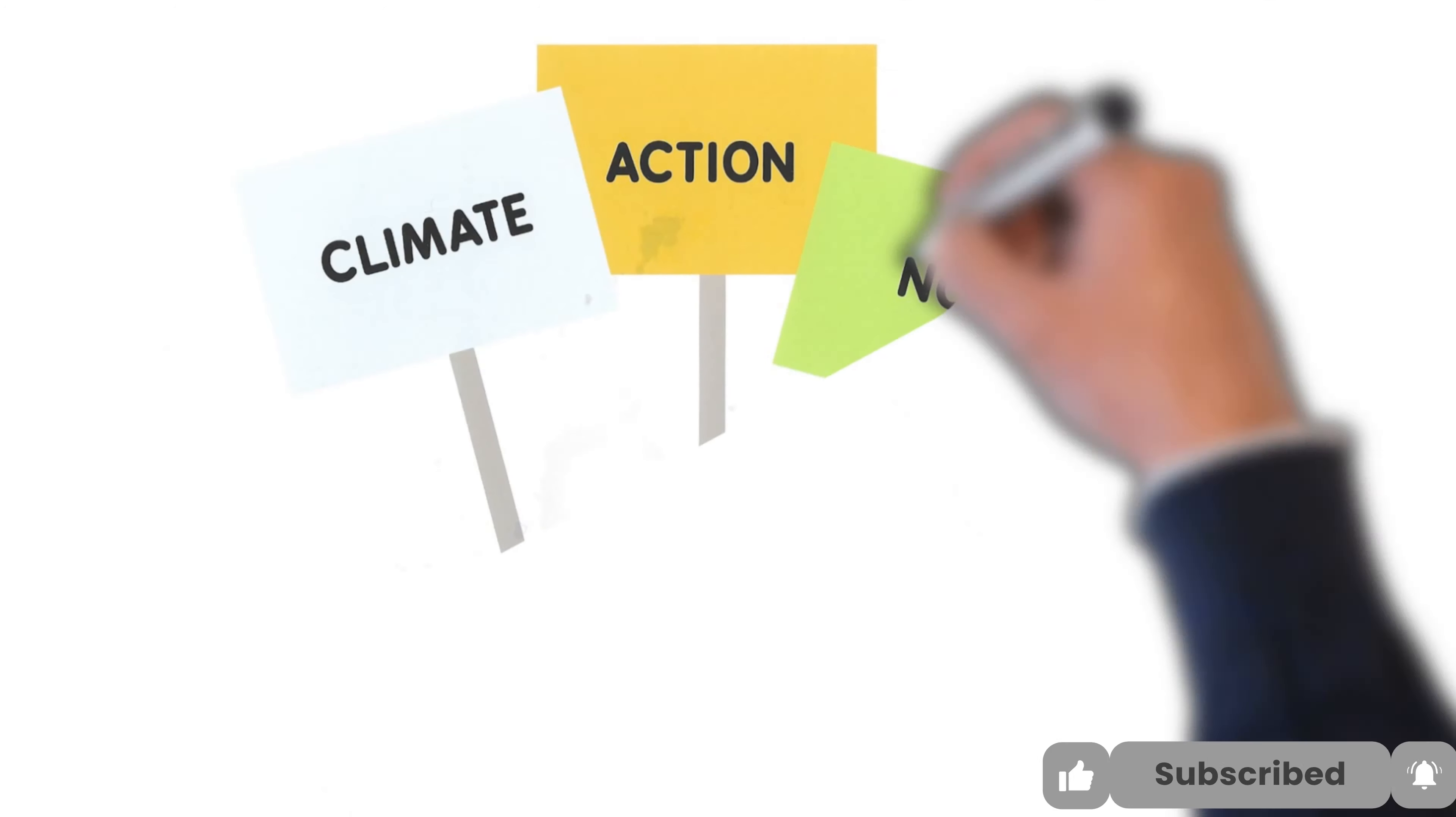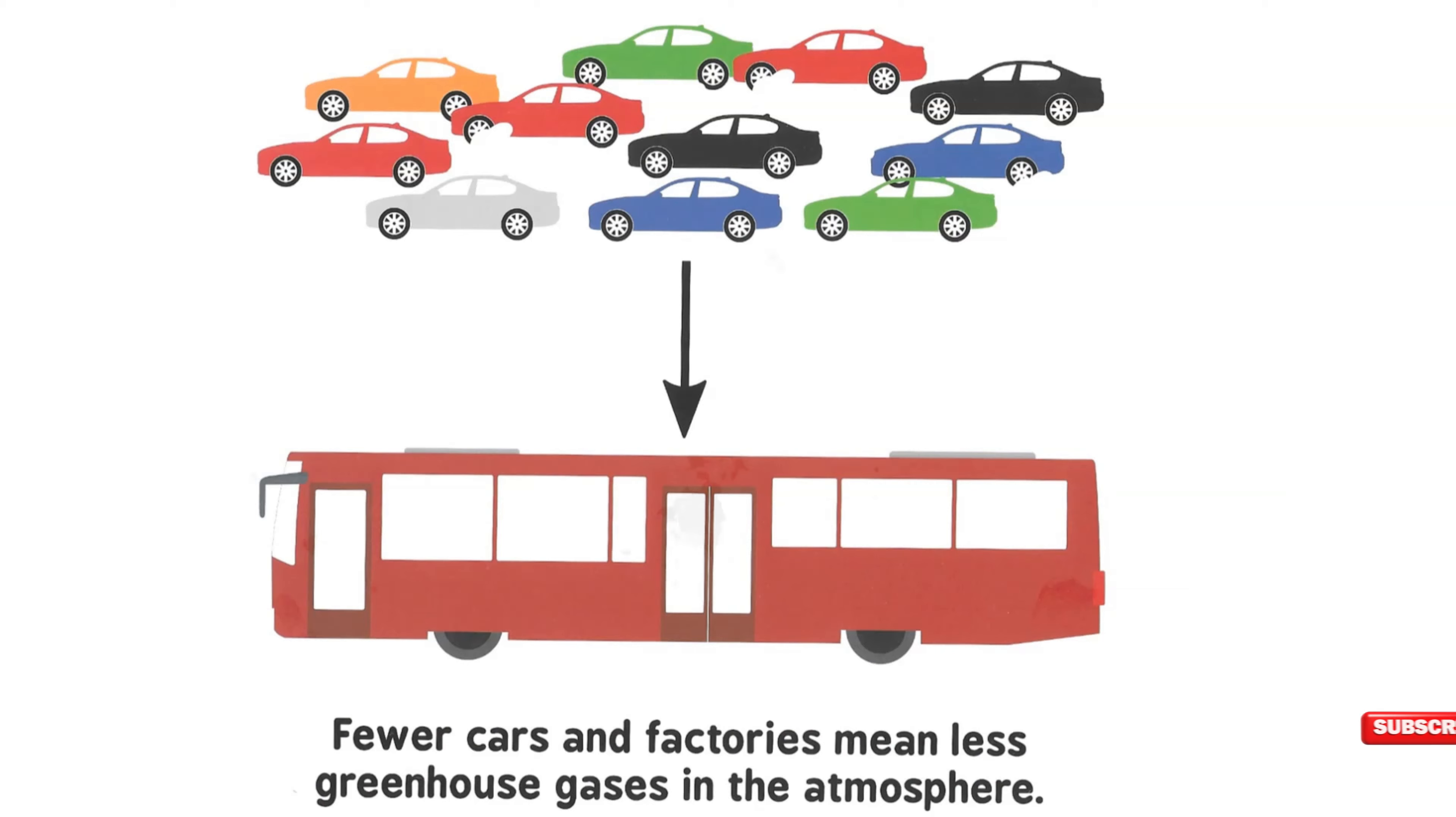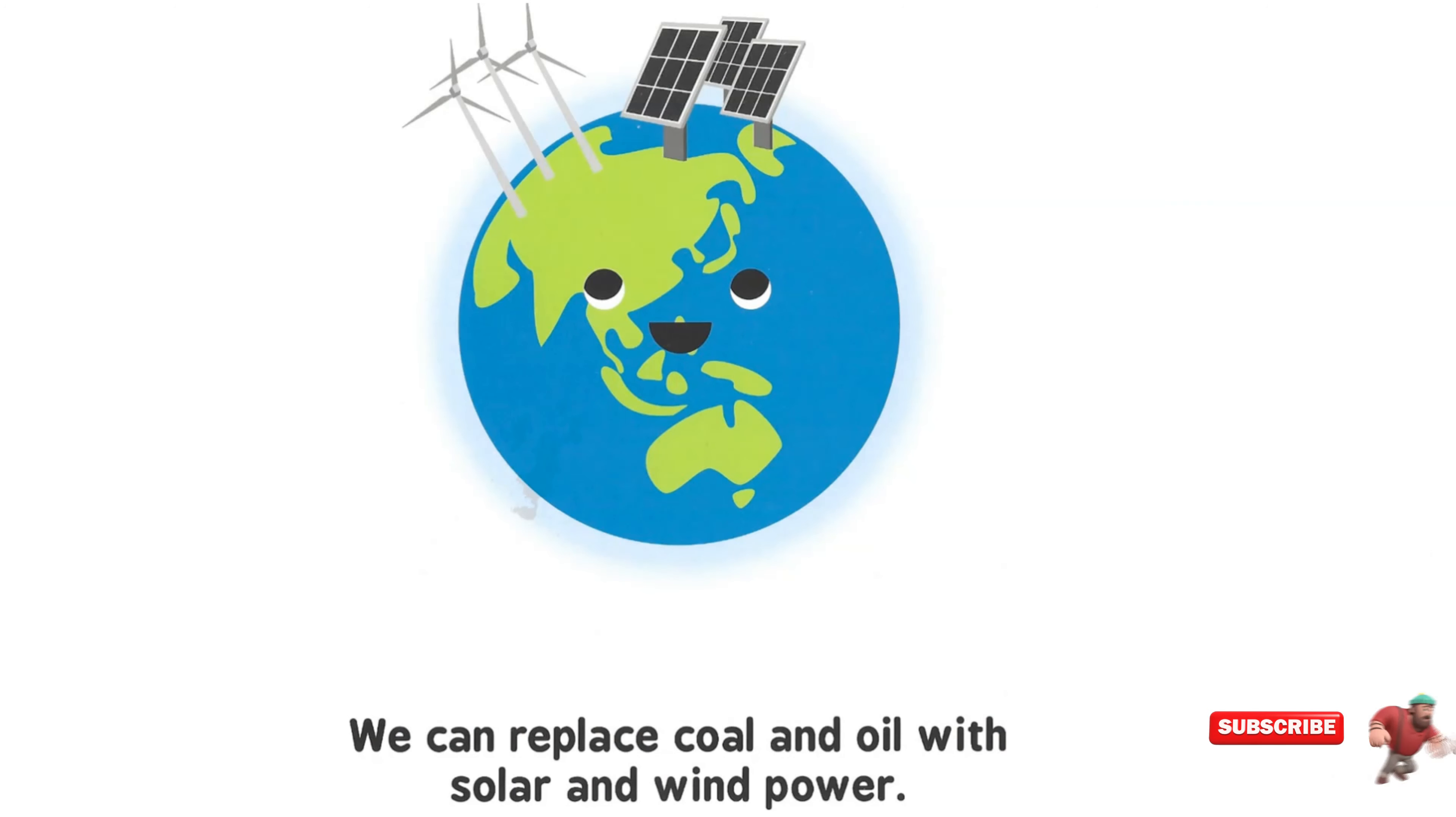But what can we do? Fewer cars and factories mean less greenhouse gases in the atmosphere. We can replace coal and oil with solar and wind power.